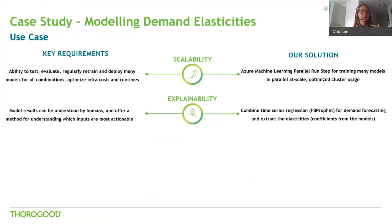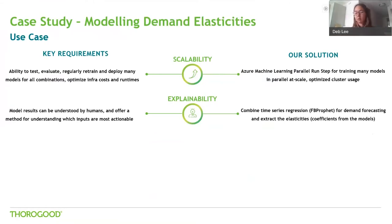The next key requirement was around explainability. The results from our models needed to be understood by the people using those models to make decisions — really trying to understand which inputs for my brand and product are the most actionable and where I should be focusing my energy: my promotional spend, my consumer promotion. We've actually used FB Prophet, which is a well-known open source time series regression package that allows us to extract the coefficients from the models, which are effectively going to be our elasticities in this scenario.